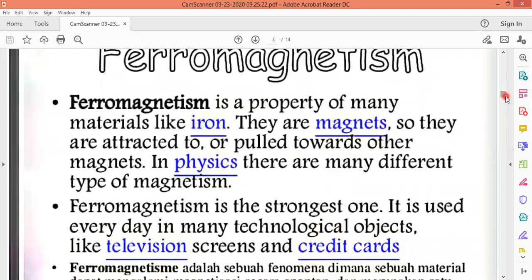Basically, you have studied that ferromagnetism is a property of many materials like iron. They are the permanent magnets, so they are attracted to or pulled towards other magnets. And in physics, there are many different types of magnetism - paramagnetism, ferromagnetism, and diamagnetism. So we have to focus as per your syllabus on ferromagnetism.